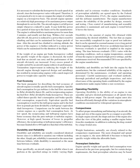Durability is the amount of engine life obtained while maintaining the desired reliability. The fact that an engine has completed its type or proof test indicates it can be operated normally over a long period before requiring overhaul. No definite time interval between overhauls is specified in the engine rating. The time between overhauls (TBO) varies with operating conditions such as engine temperatures, time operated at high power settings, and maintenance received. Recommended TBOs are specified by the engine manufacturer. Reliability and durability are built in by the manufacturer, but continued reliability is determined by maintenance, overhaul, and operating personnel. Careful maintenance, thorough pre-flight inspections, and strict observance of operating limits make engine failure a rare occurrence.